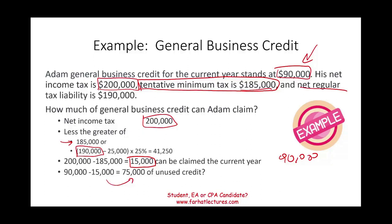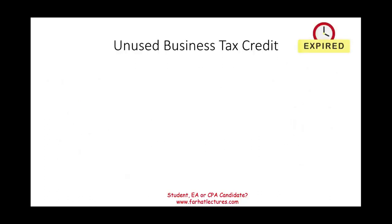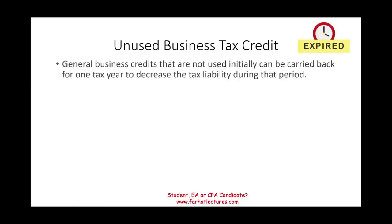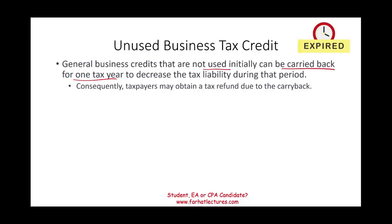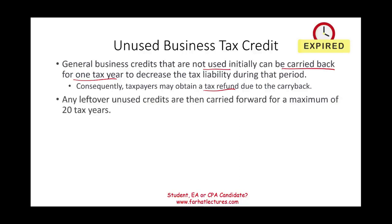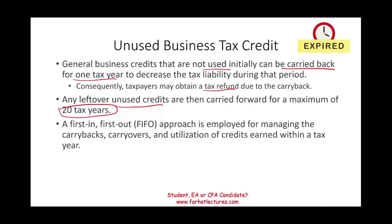Of the $90,000 in general business credits Adam accumulated, only $15,000 can be used this period, leaving $75,000 unused. Any unused general business tax credit can be carried back one tax year — you can amend your prior year return and potentially obtain a refund. If there is no prior year tax liability, the unused credit is not lost; it can be carried forward for a maximum of 20 years.